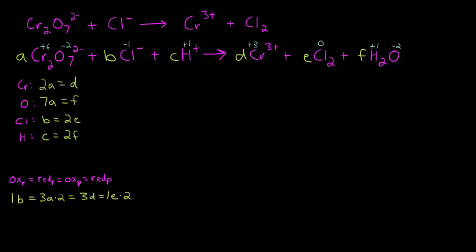So let's go down here and clean this up a little bit. We've got B is equal to 3 times 2 is 6A is equal to 3D is equal to 2 times 1, 2E.